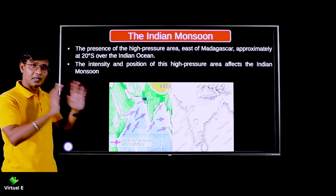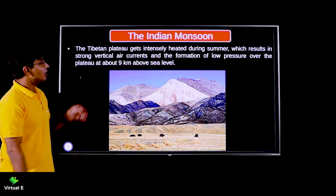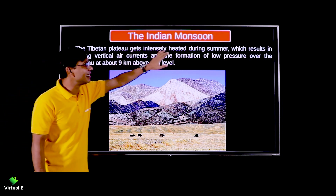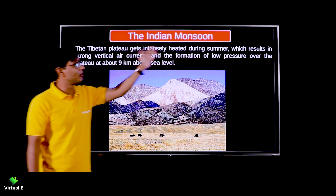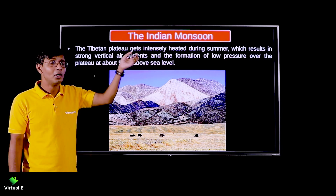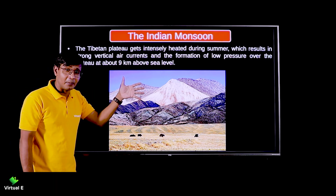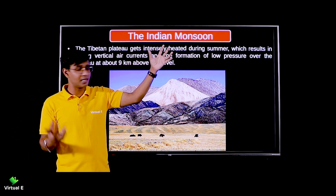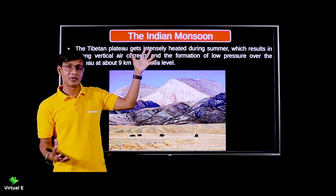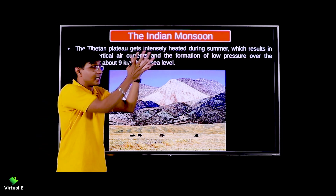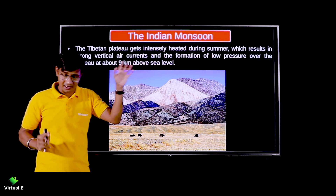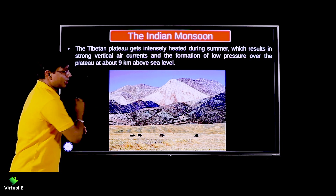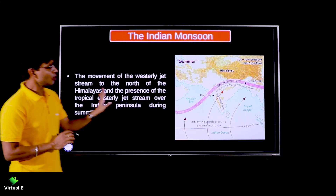The Tibetan Plateau, in the extremely northern part of the country, is intensely heated during summer. Heat means low pressure. So Tibet has low pressure, and east of Madagascar has high pressure. Wind will move from the high pressure area toward Tibet, which is pulling the winds in. So winds are being pushed from Madagascar and pulled toward Tibet.